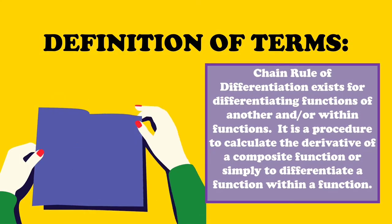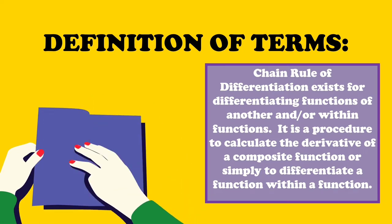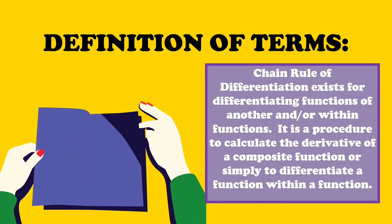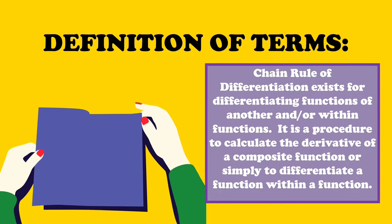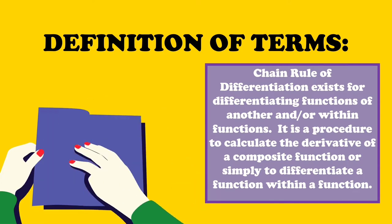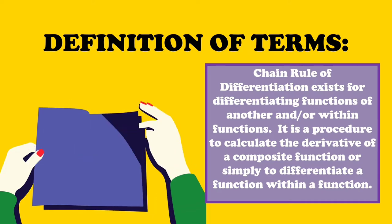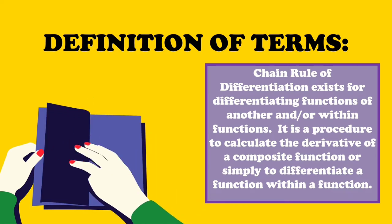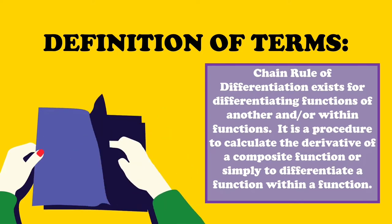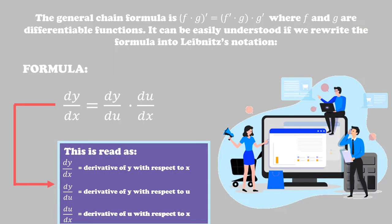Definition of terms: The Chain Rule of Differentiation exists for differentiating functions of another function within functions. It is the procedure to calculate the derivative of a composite function, or simply to differentiate a function within a function. The Chain Rule involves taking the derivative of the outer function evaluated at the inner function and multiplying it with the derivative of the inner function. The outer function is y and the inner function is u. The general Chain Rule formula is (f ∘ g)' = f'(g) × g', where f and g are differentiable functions.